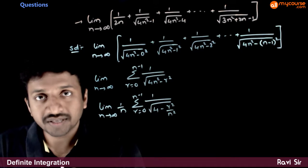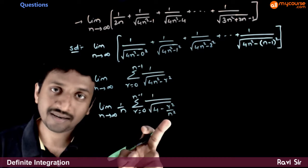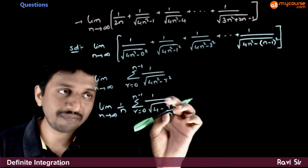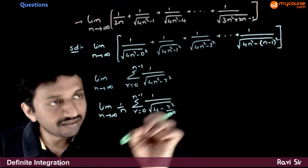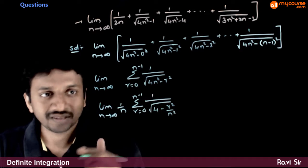Now, you have a 1 by n outside and this term is completely made of r by n. This is nothing but r by n whole square.